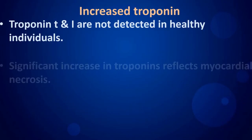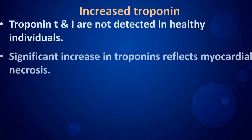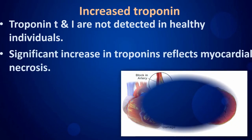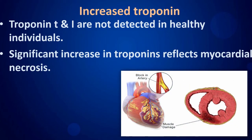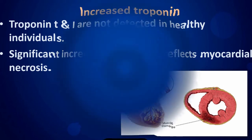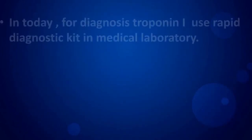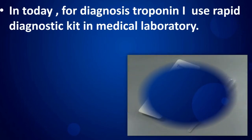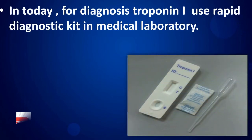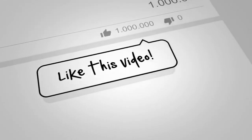Increased Troponin T and I are not detected in healthy individuals. A significant increase in troponins reflects myocardial necrosis. For diagnosis, Troponin I is measured using a rapid diagnostic kit in the medical laboratory.